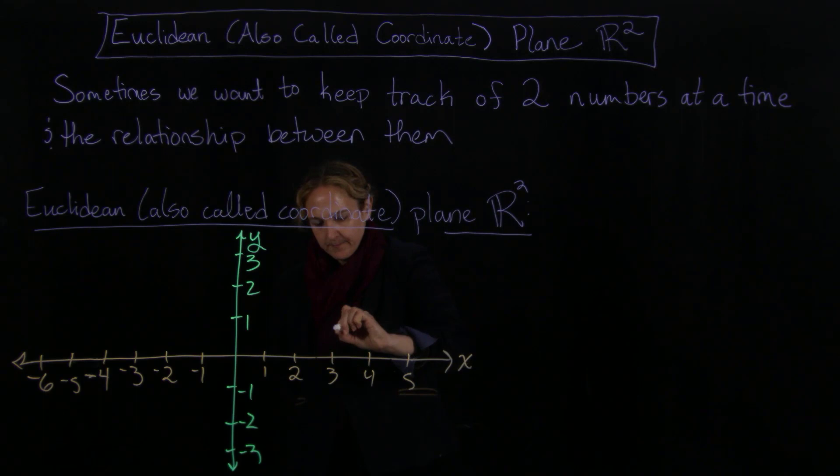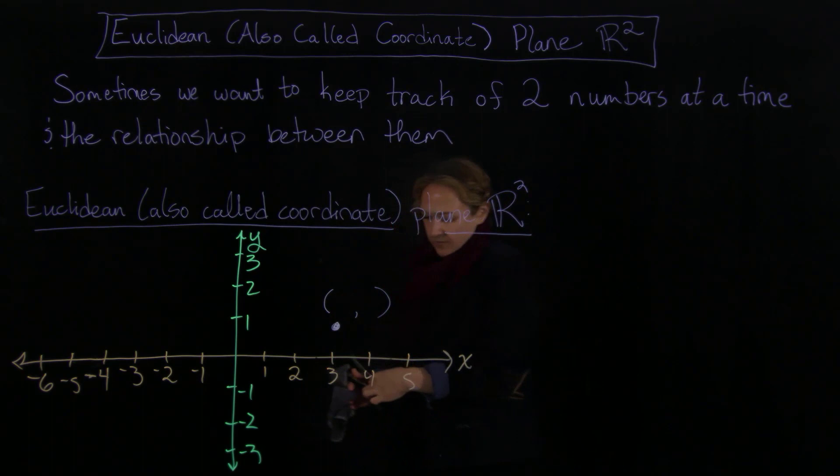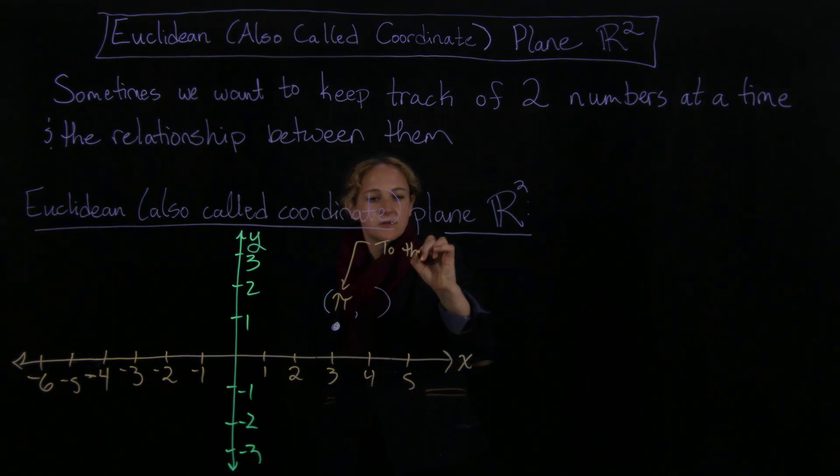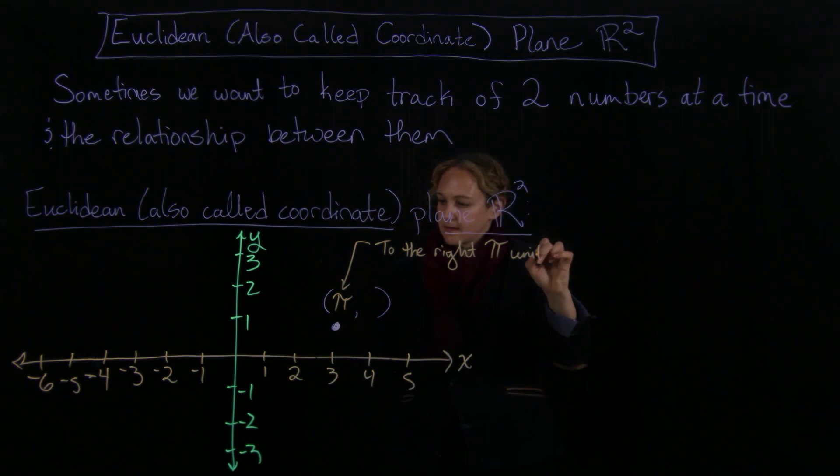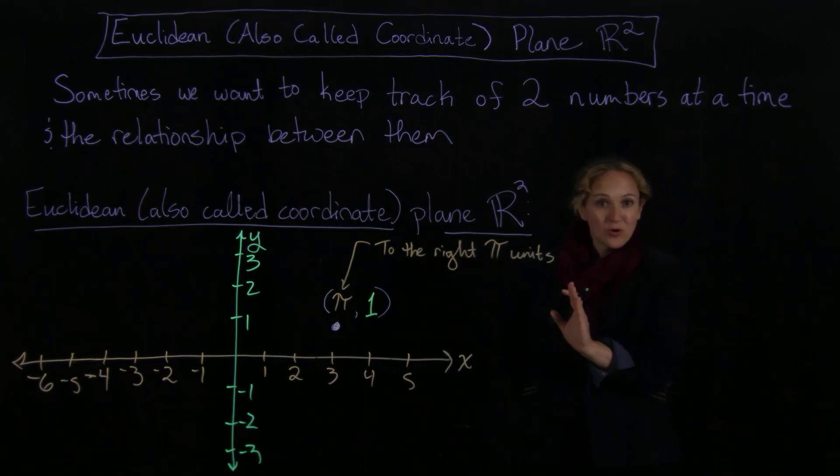So we can take a number here. What do we have going on at this particular point? So I'm looking at this point here. I'm going to write this with these kinds of brackets and a comma in between. And the first one I'm going to record, this is going to tell me that I'm going to the right pi units. So this says I'm going to the right pi units. And then I have a second, so we have one. And this tells me that I go up because it's in the second place. The first coordinate told me right or left.